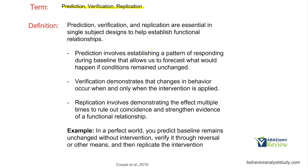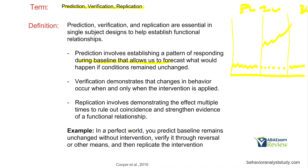Prediction, verification, and replication — sometimes called baseline logic — are essential to establishing functional relationships. Prediction involves establishing a pattern of responding during baseline and forecasting what happens if conditions remain unchanged. Verification demonstrates that changes in behavior occur only when the intervention is applied — we verify that without intervention, baseline would remain unchanged. Replication means repeating the intervention multiple times to confirm we are controlling the behavior and to strengthen the functional relationship. In a perfect world, you predict baseline remains unchanged, verify it through reversal or other means, and then replicate the intervention.